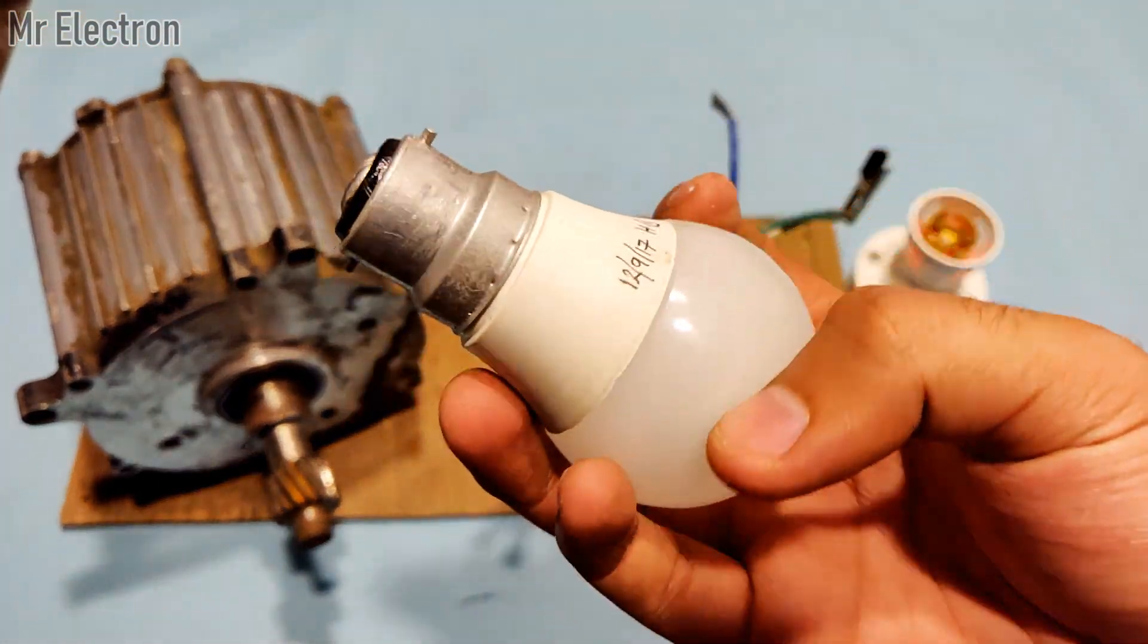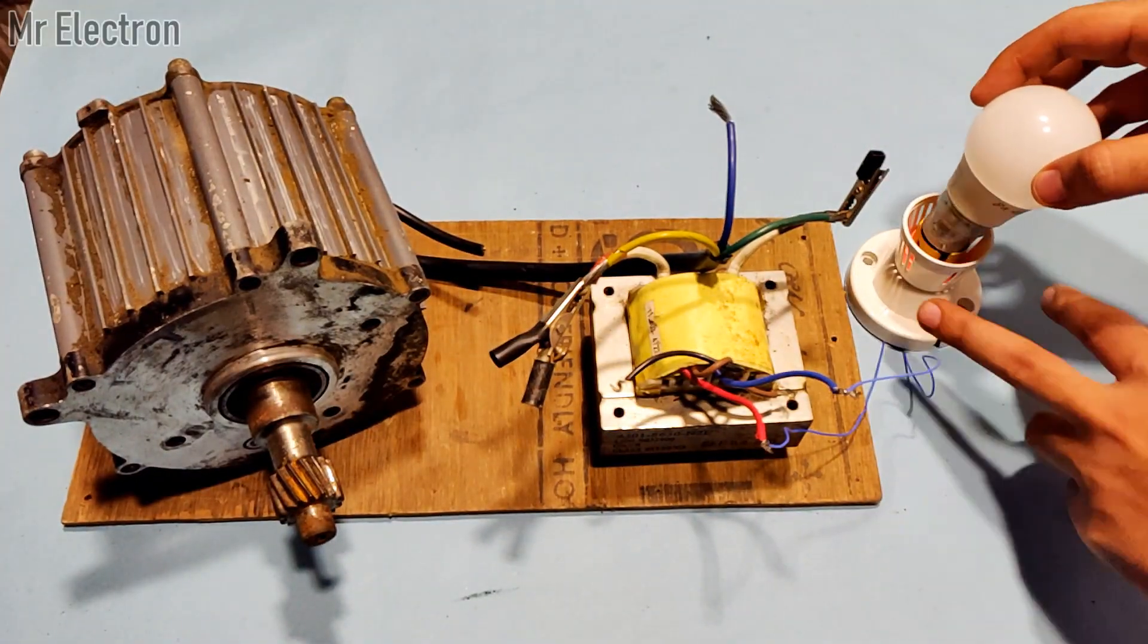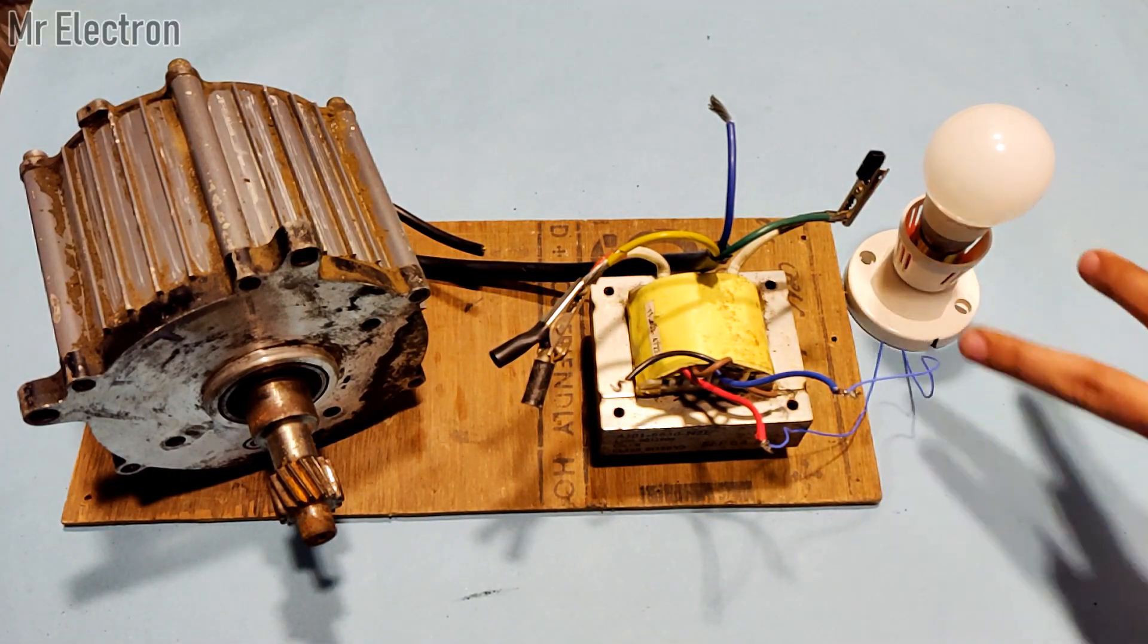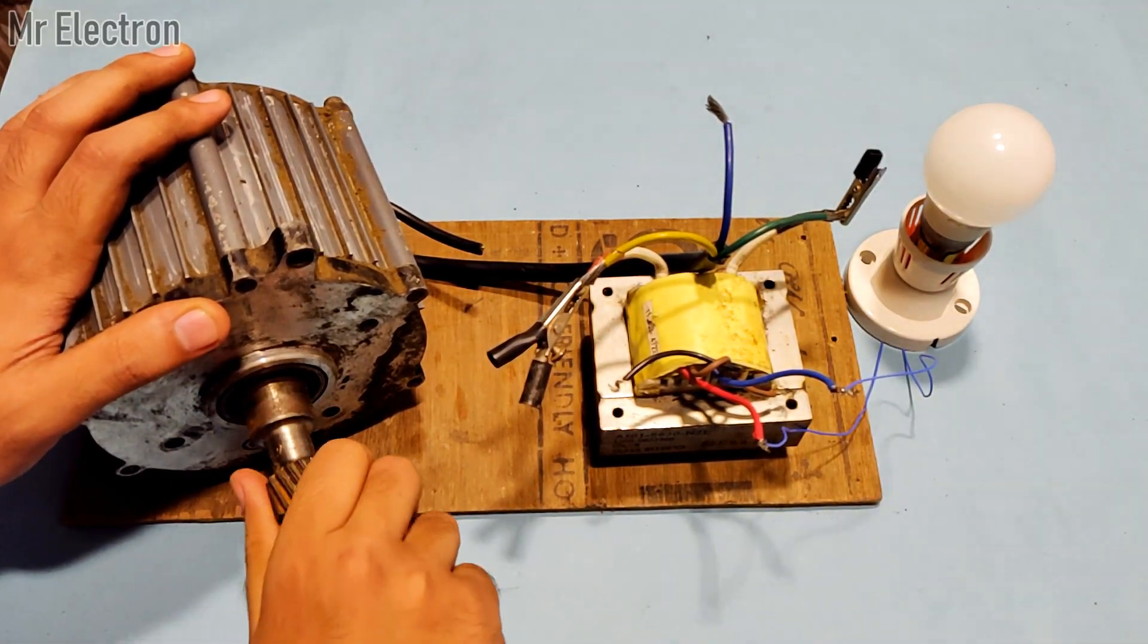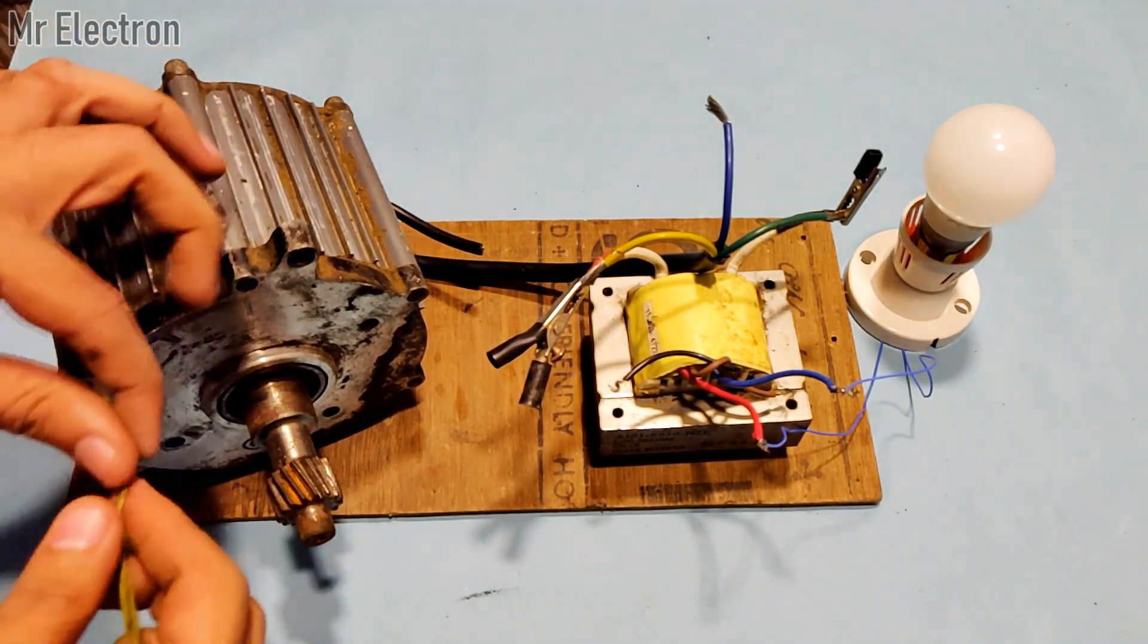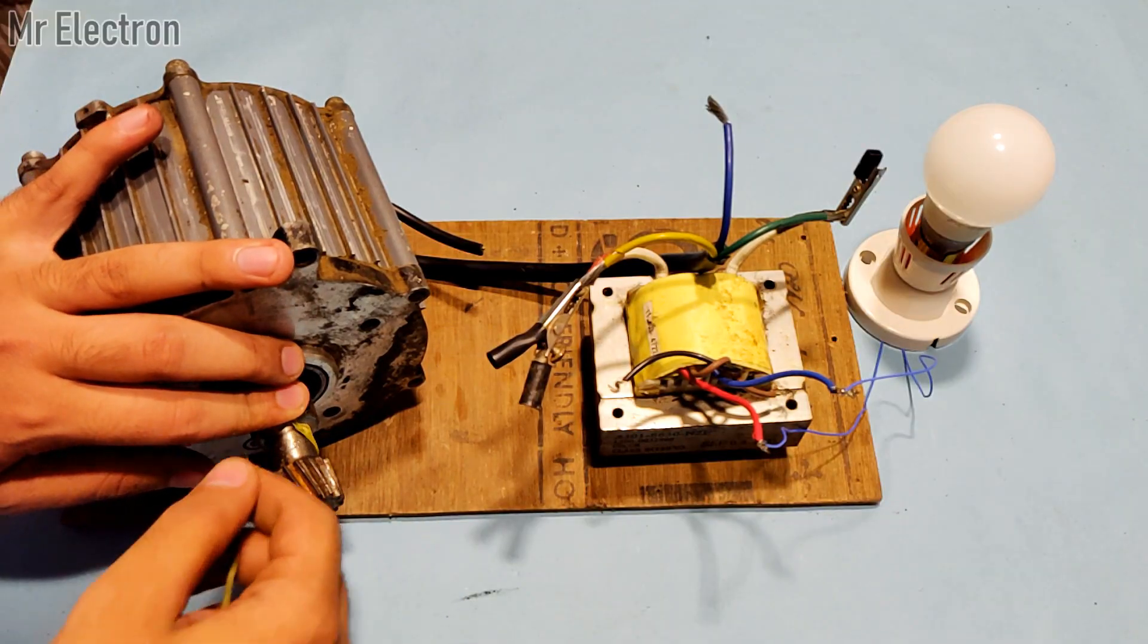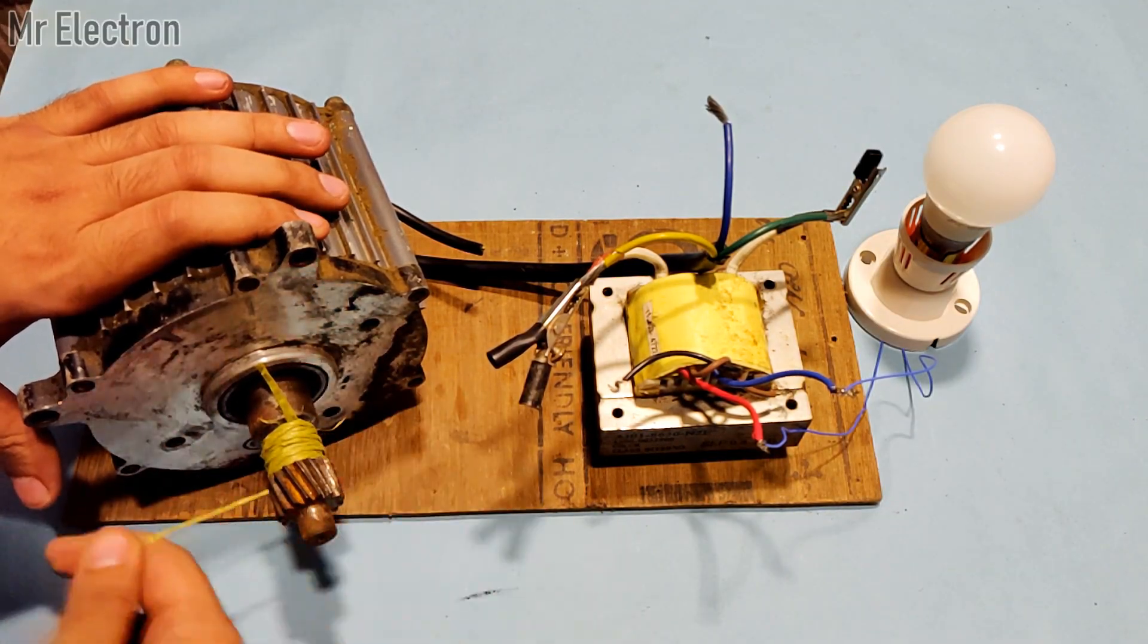You can see this is an LED bulb, 3 watts. Since the power rating of this bulb is really low, 3 watts, I can easily light it up with just simple hand rotation. For some better output, I'm going to use this thread to light up the bulb.